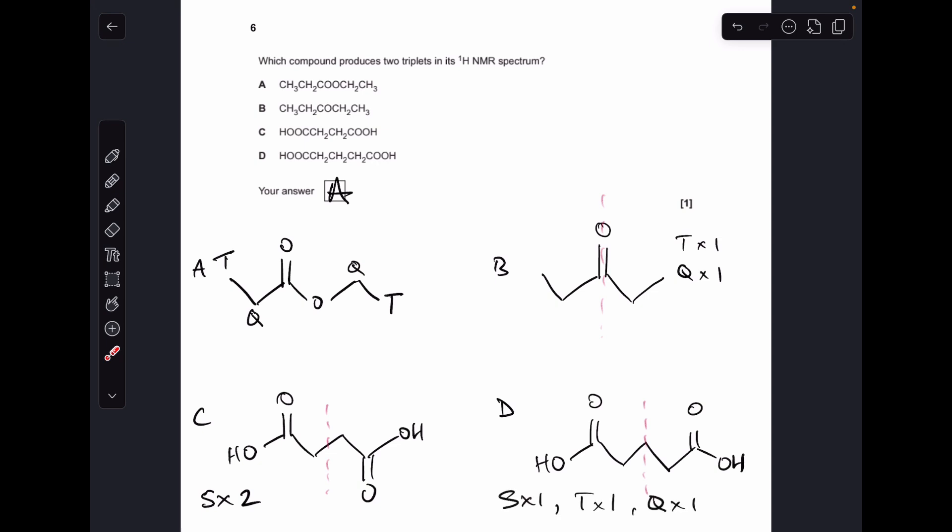And then in option D, again we've got a line of symmetry there, so they're equivalent, so we'll see a singlet for them. These are equivalent, they're adjacent to a CH2 group, so we'll see a triplet for them. And then for this environment here, you've got two adjacent CH2 groups, so you're going to see a quintet, so that's a signal of five peaks.